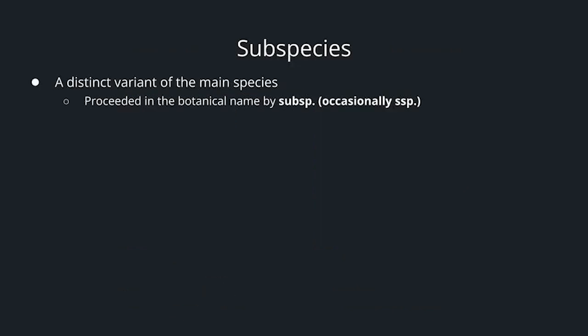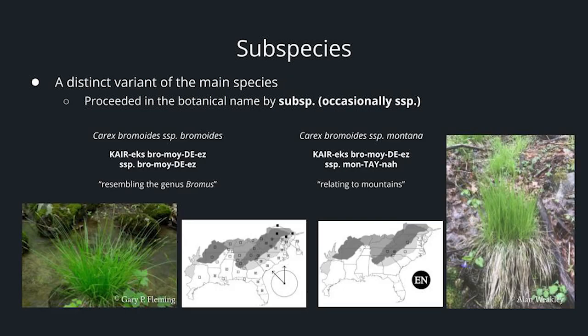A subspecies is a distinct variant of the main species, preceded in the botanical name by subsp. or occasionally SSP. The species represents the one with the widest range, and subspecies have smaller ranges. We have Carex bromoides — bromoides meaning resembling the genus Bromus, a grass — and you can see how widespread that range is. Then we have Carex bromoides subsp. montana, meaning relating to the mountains, and its range is more isolated to the mountains.